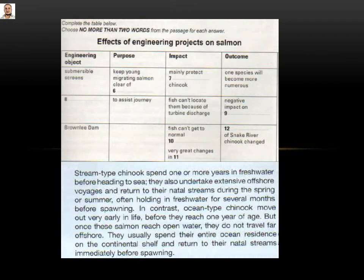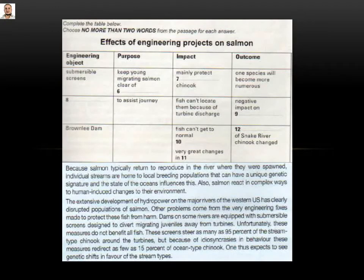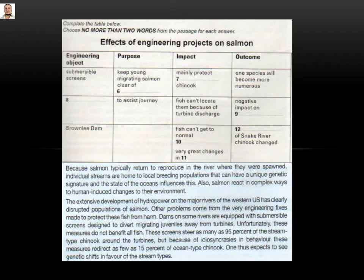Now the second question: it says submersible screens. When we read this passage, we haven't seen anything related to submersible screens, so we need to look for it. I found it in the paragraph about 'the extensive development of hydropower.' We said because each row you will find in one paragraph, that means six and seven will be in this paragraph. Reading: 'Dams on some rivers are equipped with submersible screens.' So we come to the purpose.